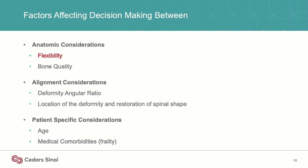These are some of the factors I look at when going through a patient and deciding what type of osteotomy they're going to need. In terms of the anatomy of the patient — their flexibility and bone quality — alignment considerations in terms of how angular their deformity is, where it is, and how important restoring their spinal shape may be for that particular patient, and then patient-specific issues like age and comorbidities.